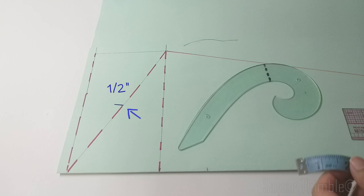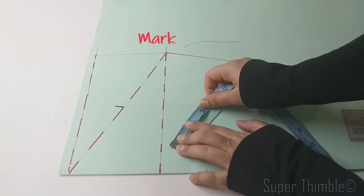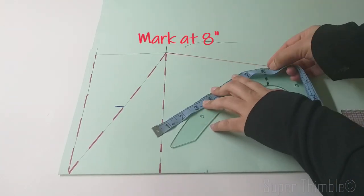Use a French curve to mark the armhole curves. From the edge of the French curve, measure 8 inch and mark.